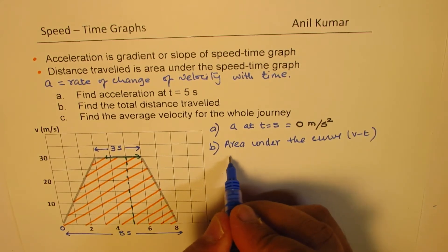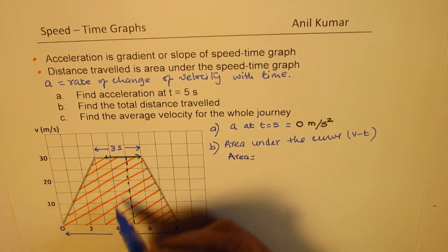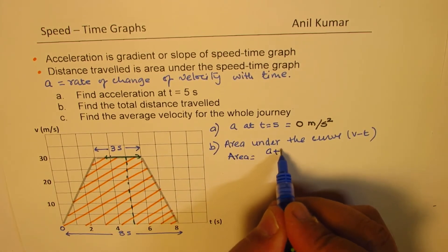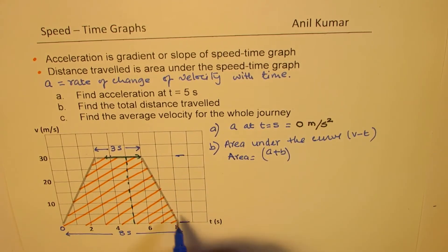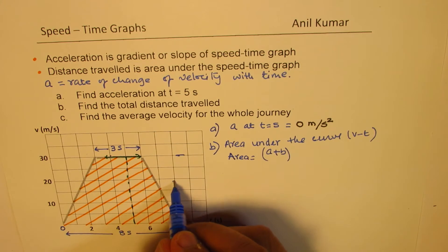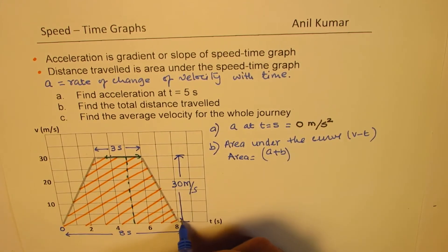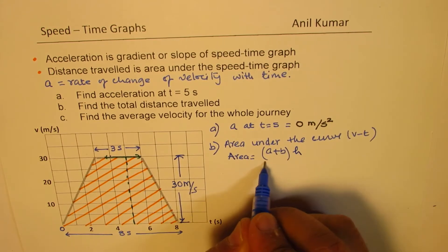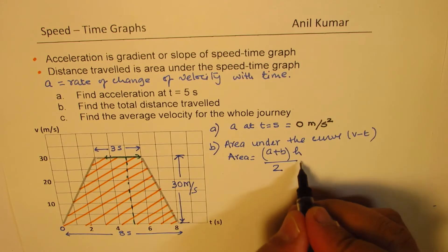So the formula of area under this curve is equals to sum of these two sides. Normally, we write a plus b times the height. So this height, now this height is 30 meters per second, times the height over 2.